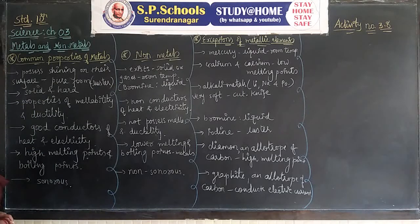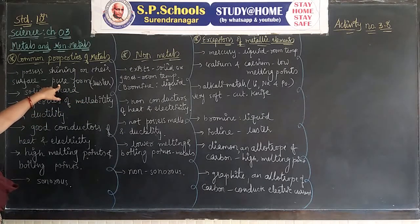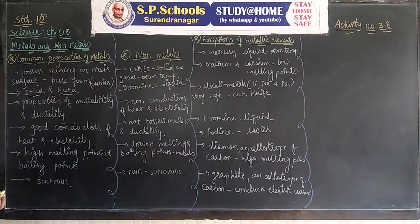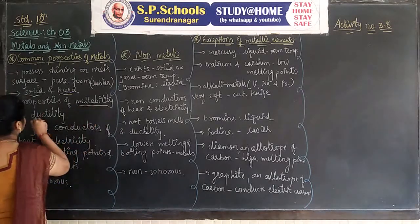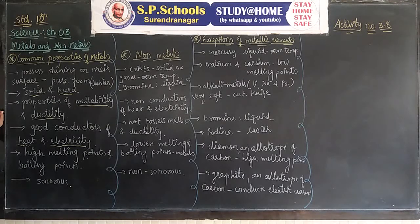The common properties of metals are: metals possess shining on their surface — we call it luster — when they are in pure form. Metals are solid and hard. Properties of metals include malleability and ductility. Metals are good conductors of heat and electricity.